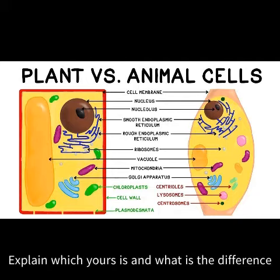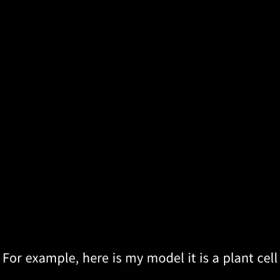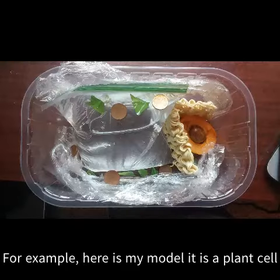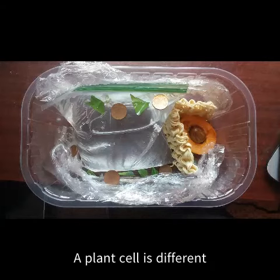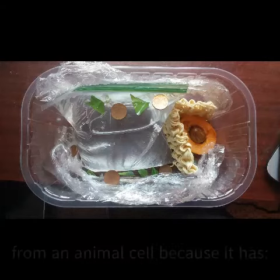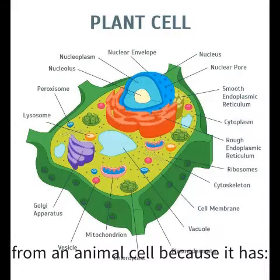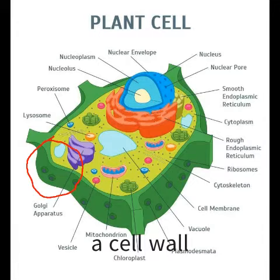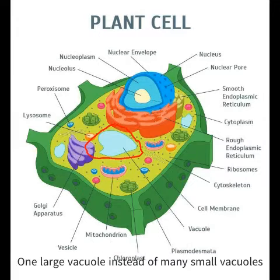Explain which yours is and what the difference is. For example, here is my model. It is a plant cell. A plant cell is different from an animal cell because it has a cell wall and one large vacuole instead of many small vacuoles.